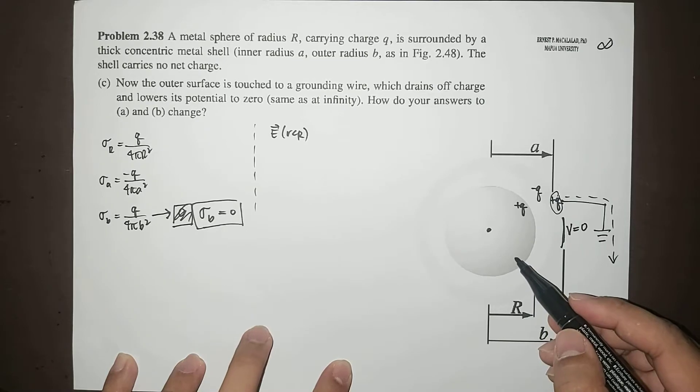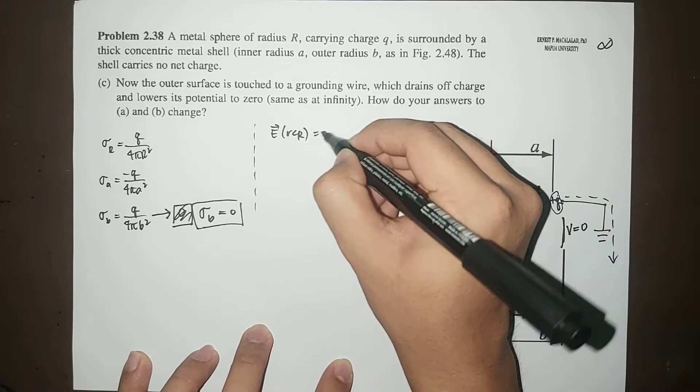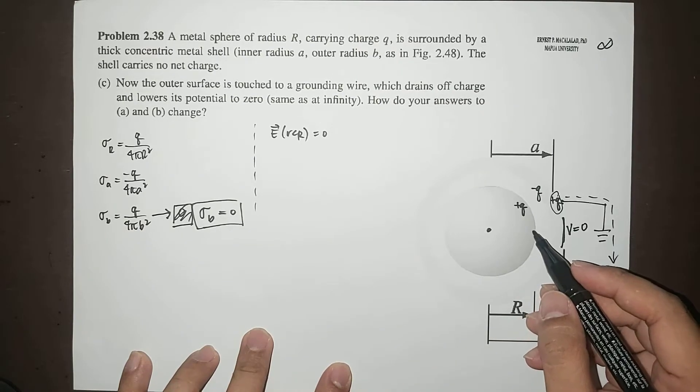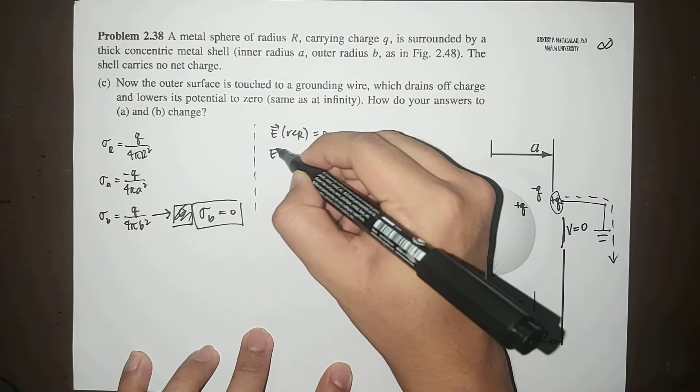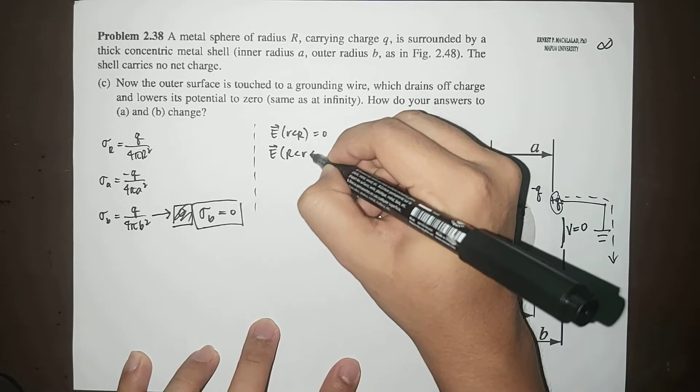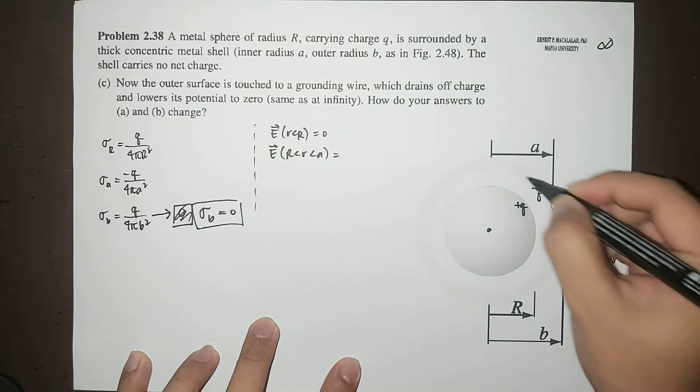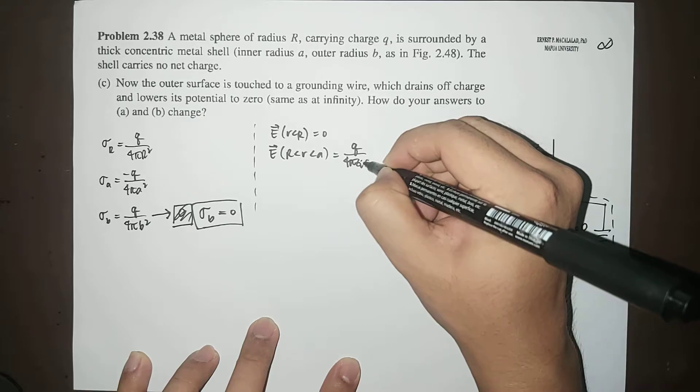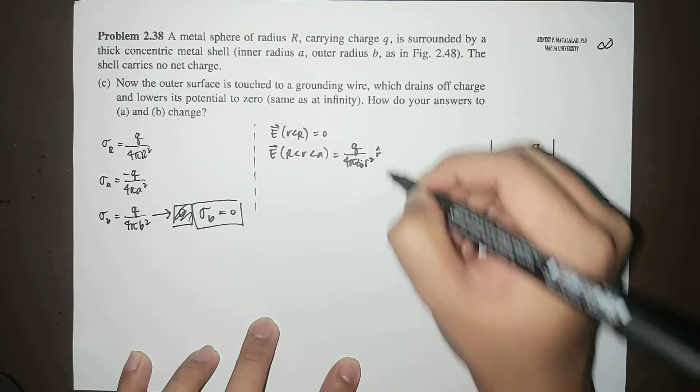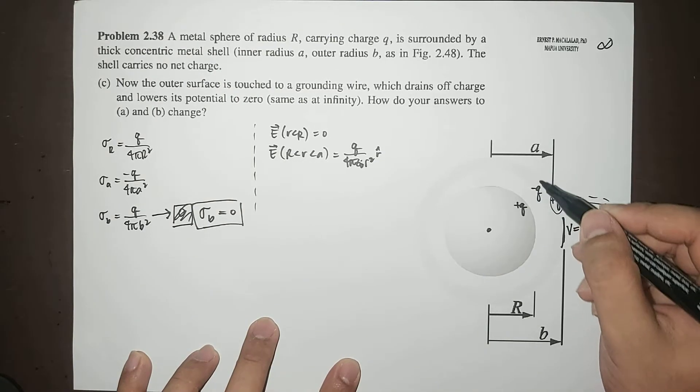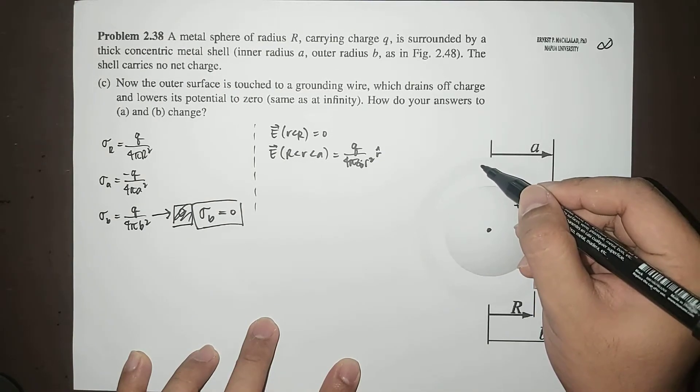the potential between infinity to the center. Okay, so as a result, the electric field will now change. The electric field inside the sphere would still be zero. The electric field between the sphere and the shell would still be the same because the charges here did not change.